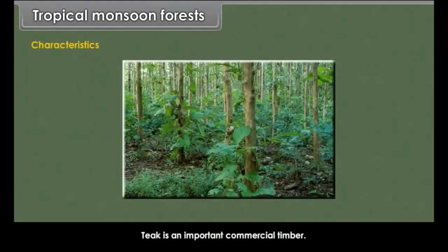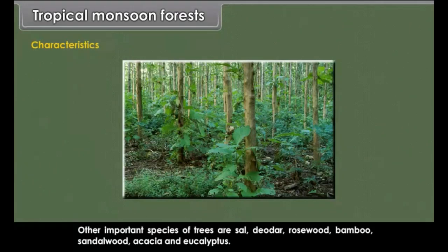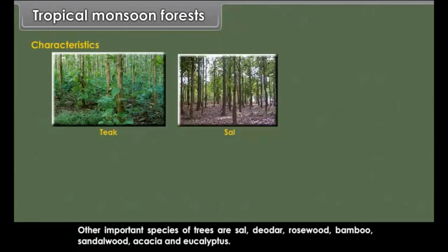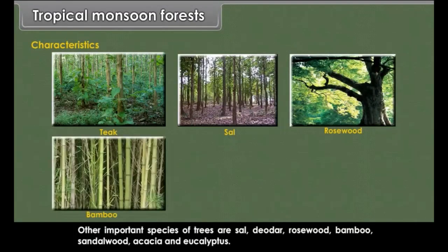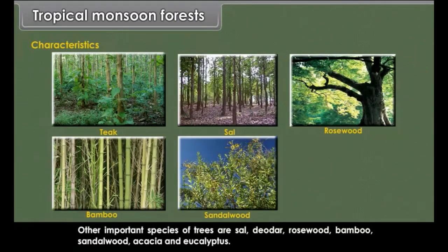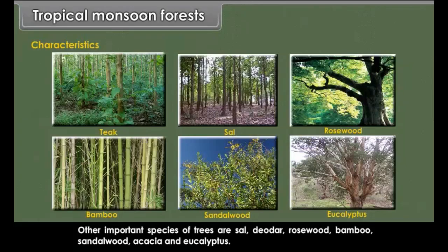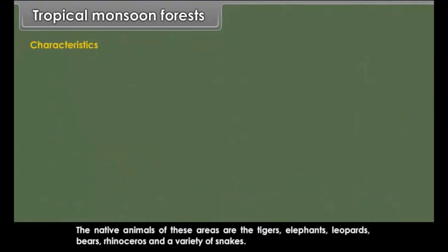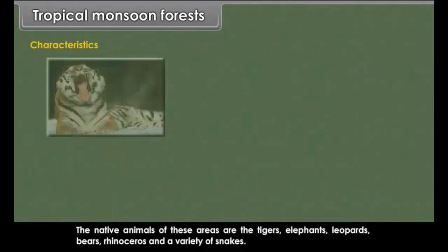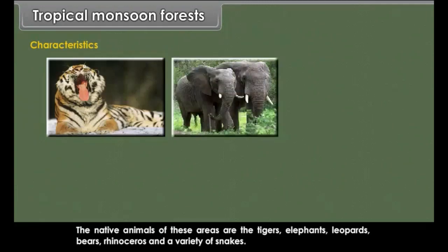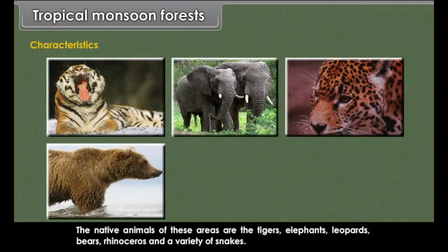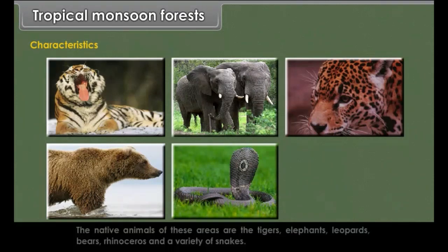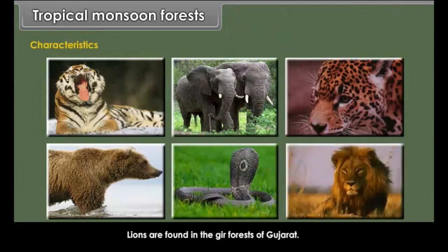Teak is an important commercial timber. Other important species of trees are Sal, deodar, rosewood, bamboo, sandalwood, acacia and eucalyptus. The native animals of these areas are tigers, elephants, leopards, bears, rhinoceros and a variety of snakes. Lions are found in the Gir forests of Gujarat.